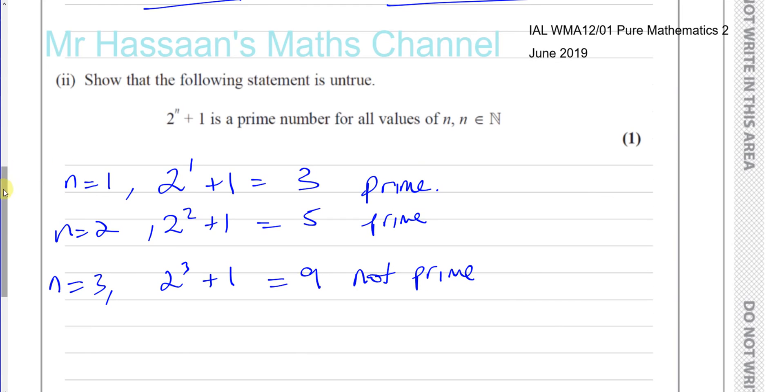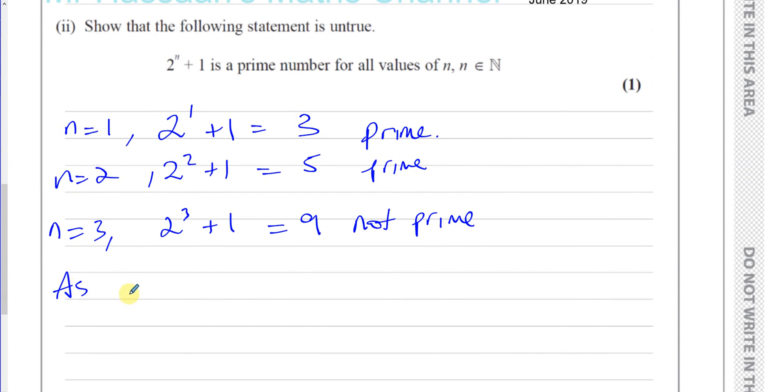As when n equals 3, 2 to the power of n plus 1 isn't prime. Therefore, the statement is proved to be false. The statement 2^n plus 1 is a prime number for all values of n is false.